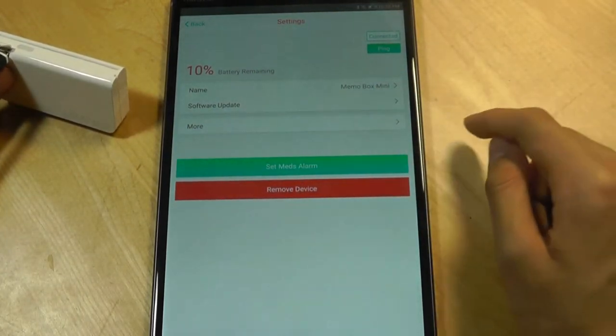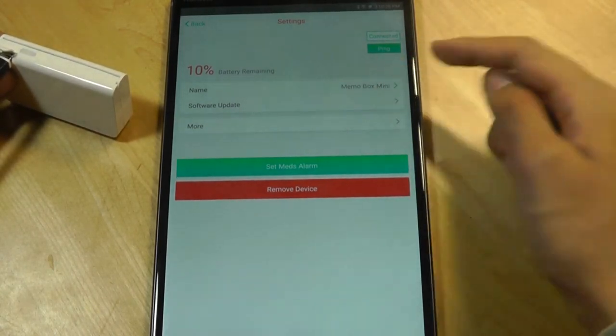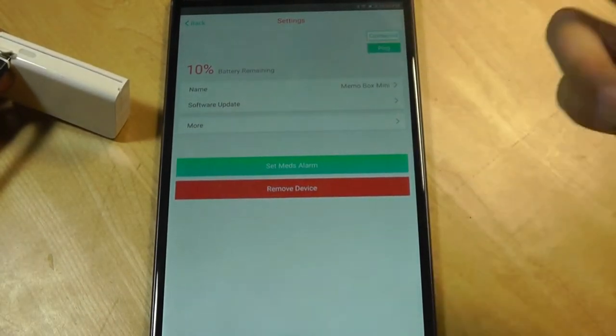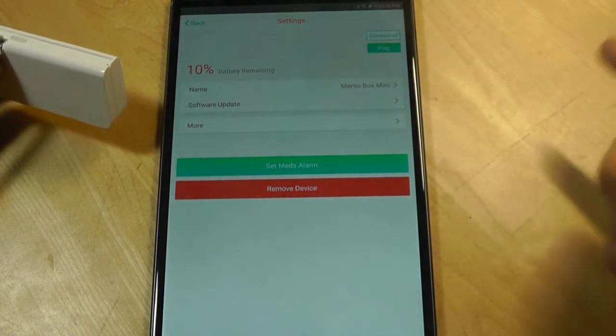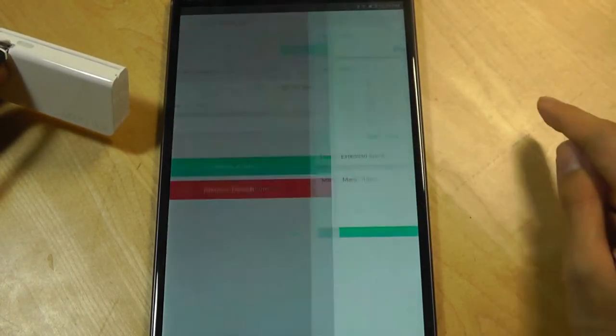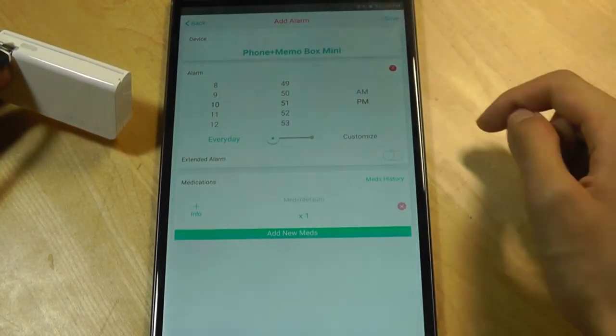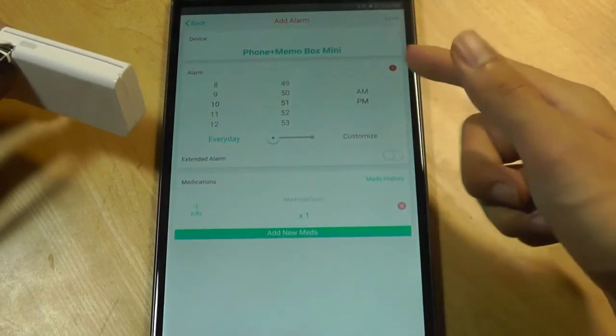From here, we're also able to take a look if there's any software updates we want to push over. We can rename this box to something like Tuesday if you purchase multiple sets. I can also set another alarm for a specific medication, which will ring both on the box as well as on the phone.